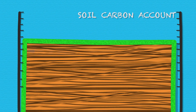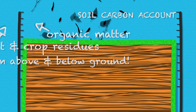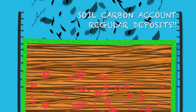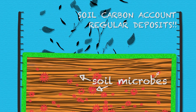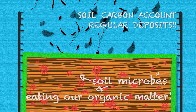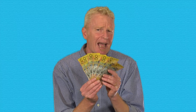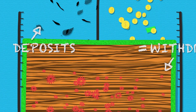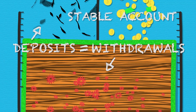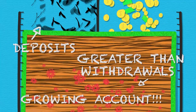A balanced soil carbon account generally requires a regular supply of plant residues and organic matter, providing regular deposits into the account. Meanwhile, soil microbes eat away at the organic matter, using some nutrients for themselves and releasing remaining nutrients for plants to access — it's a bit like having regular expenses taken from your account. That's why we have to keep making regular deposits to maintain a soil carbon account balance. If your deposits match your withdrawals, you'll have a stable soil carbon account, and if your deposits are greater than your withdrawals, your account will grow.